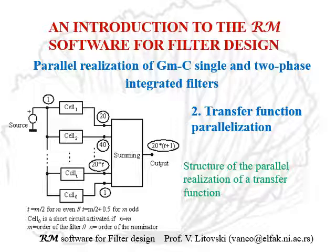Here is the structure of the parallel GMC filter, which is topologically identical to the one for active RC circuits. The difference is only in the structure of the cells and the structure of the zooming amplifier.